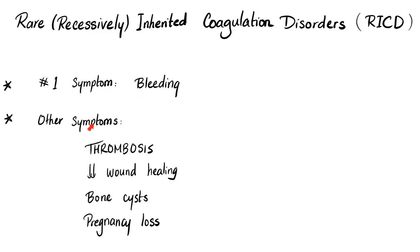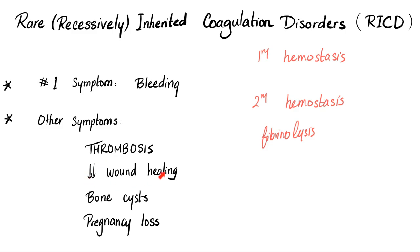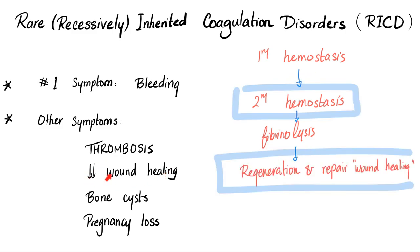Factor 10 deficiency falls in a category called rare or recessively inherited coagulation disorders, RICD. The most common symptom is bleeding. But also thrombosis — anything that can make you bleed can make you thrombose. For example, thrombin itself is pro-coagulation, but thrombin bound to thrombomodulin forms the thrombin-thrombomodulin complex, which is anti-coagulation. DIC and TTP are other examples. Factor 1 deficiency also had both bleeding and thrombosis. Decreased wound healing occurs because secondary hemostasis is needed before fibrinolysis and then regeneration and repair — no secondary hemostasis means delayed wound healing.